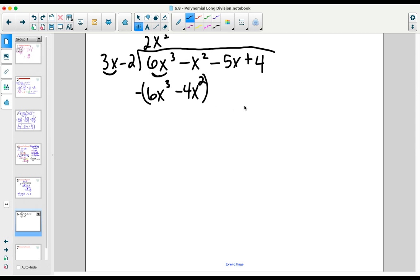Subtracting that binomial from the original polynomial, 6x³ - 6x³ goes away. -x² minus -4x² leaves us with 3x², and we bring down the next term.